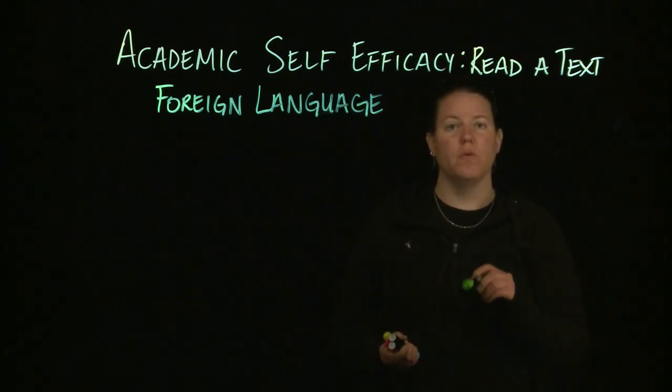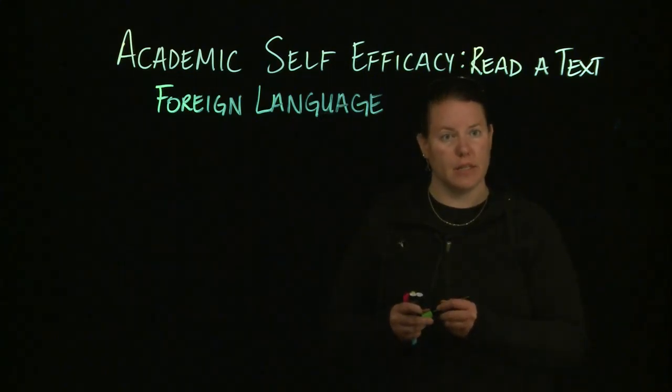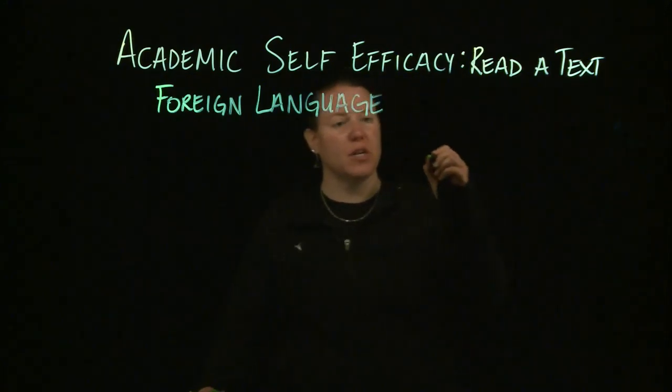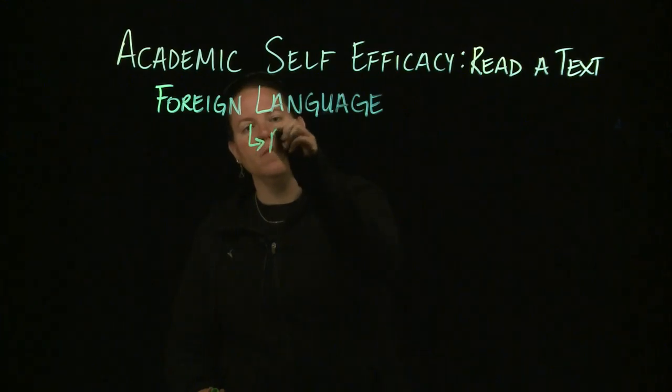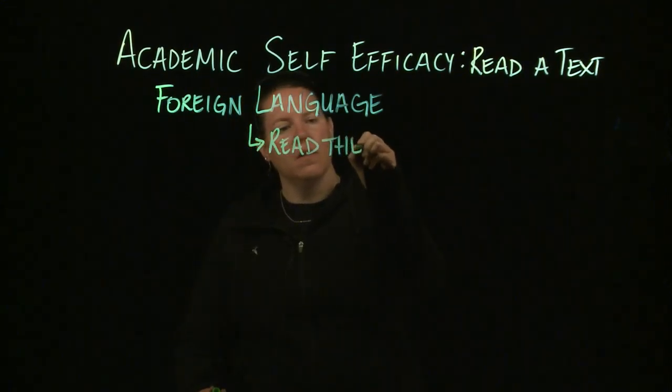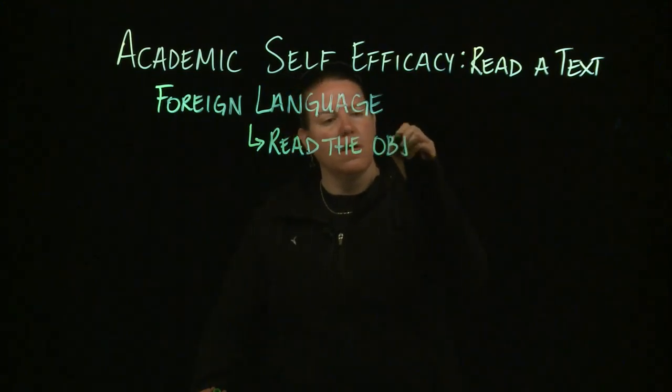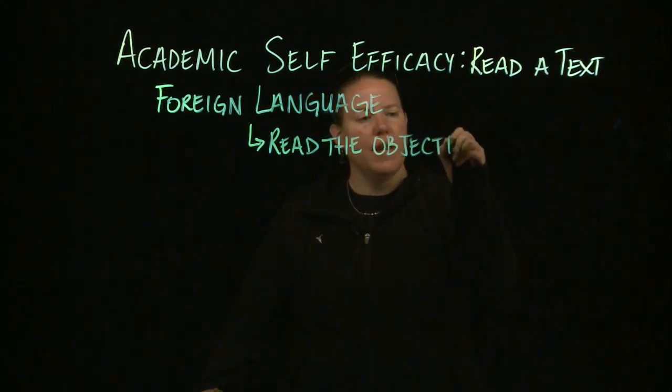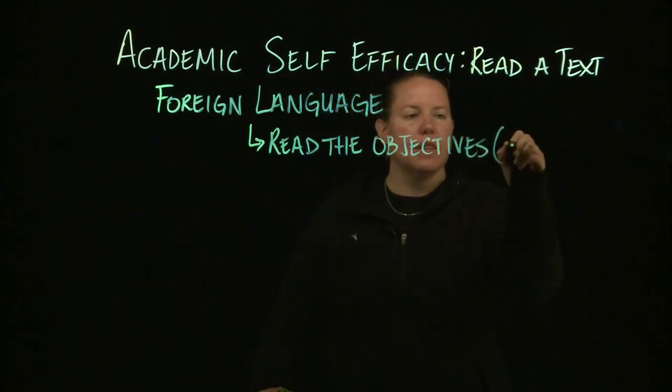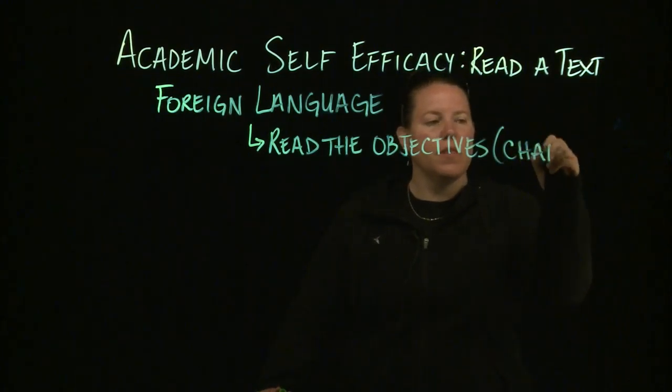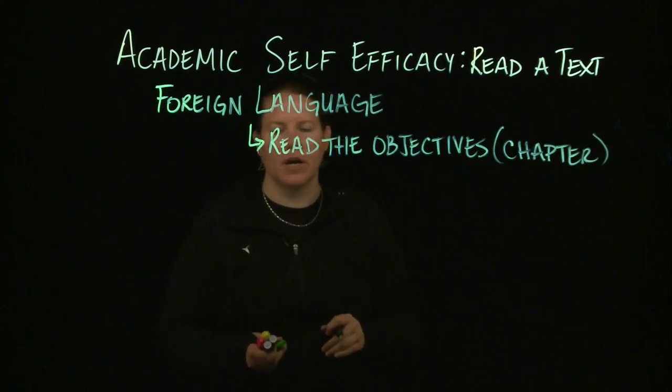Now the way you're going to do the chemistry text, the best way is to read the objectives. If it has objectives at the beginning of the chapter, then read those. It's very quick to read. It's almost like a chapter outline—here's what we're going to cover.